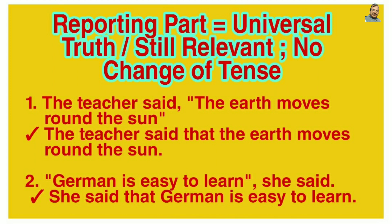There is also no change of tense when the reporting part verb is in past tense but the reported part is a universal truth sentence, or is relevant to the present time. For example: 'The teacher said, the earth moves around the sun.' Indirect speech: 'The teacher said that the earth moves around the sun' — same, no change. Another example: 'She said, German is easy to learn.' Indirect speech: 'She said that German is easy to learn.' There is no change of tense when the reported part is a universal truth or a sentence relevant to the present time.